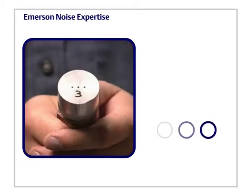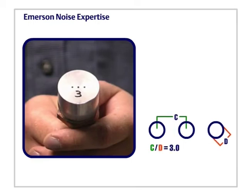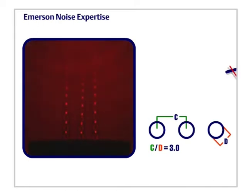This example uses the same three holes, each one-eighth inch in diameter, but the spacing ratio is three. In other words, the distance between the holes has doubled. This time, the jets stay independent for the duration of the test.